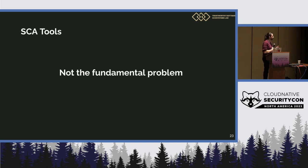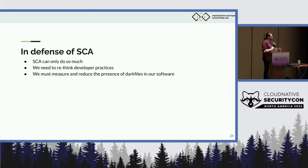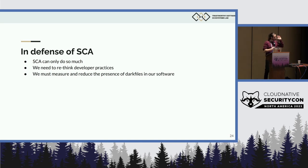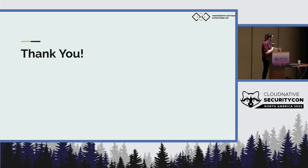You may be tempted to say this is a problem with software composition analysis tools — that Trivy is not good enough. Our argument is that that's not actually the problem. The fundamental problem is that SCAs can only do so much. They can only guess so much, they can only mine so much information. What we need to be doing is thinking about how we can communicate better information inside of software artifacts. We must measure and reduce dark files by seeing how they appear and taking steps to better communicate software supply chain information. Thank you so much.